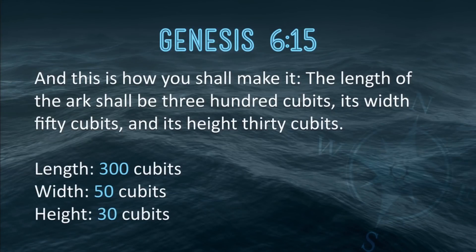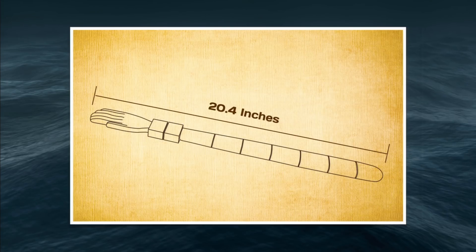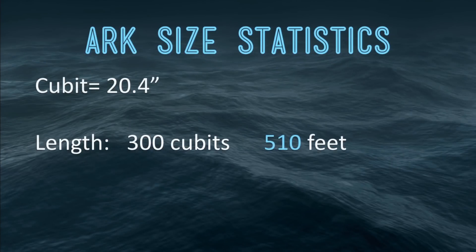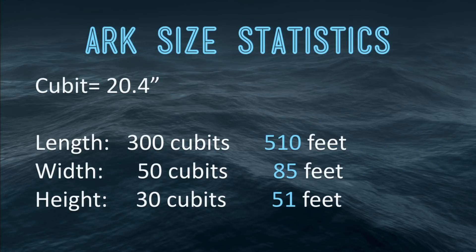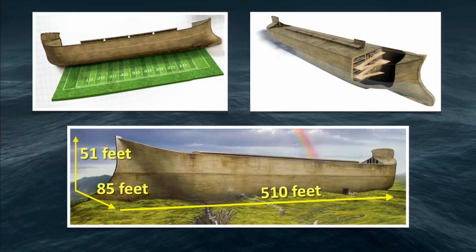We know that its length was 300 cubits, its width was 50 cubits, and its height was 30 cubits. A cubit is the length of an adult man's elbow to the tip of his middle finger. Depending on the individual, that size varies, and we don't know exactly what size cubit Noah used. But in many ancient large construction projects, they typically used the long cubit — 20.4 inches — also called the royal cubit or the Hebrew long cubit. That is the cubit size used to build Noah's Ark at the Ark Encounter. Using that cubit length: the length is 510 feet, the width is 85 feet, and the height is 51 feet. That is very different from those fairy tale bathtub arcs.